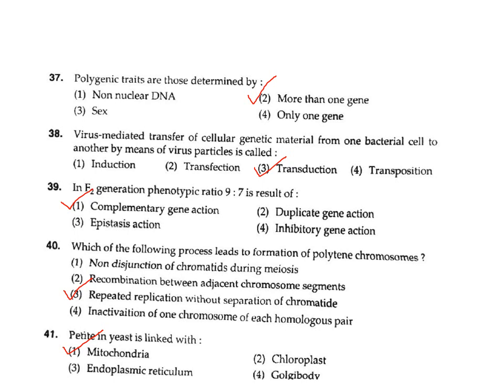Question 39: In the F2 generation, a phenotypic ratio of 9:7 is the result of what? The 9:7 ratio comes from complementary genes. Correct answer Option 1.